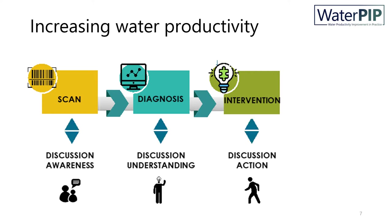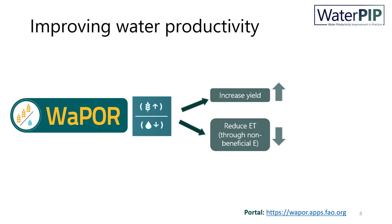At each of these steps, it's important to engage with stakeholders, from awareness raising to confirming the challenges identified through diagnostics, to discussing the next steps to improve water productivity. In this presentation, we focus on improving the VAPOR definition of water productivity, which can be observed using remote sensing, defined as biomass production over evapotranspiration. I will look into the two components of the equation and go through typical interventions that can either improve biomass production and/or reduce water consumption.